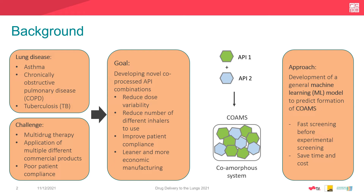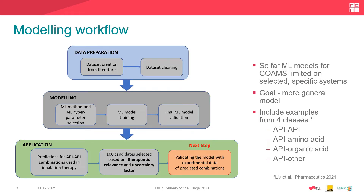We present a machine learning model to predict the formation of co-amorphous systems, which shall help in the screening phase before experimental work, saving time and cost. Machine learning models for predicting co-amorphous systems described so far in literature are limited to selected or specific kinds of systems — for example, formation of co-amorphous systems from APIs with just amino acids. The goal here was to have a more general model, so we included examples from four classes based on a classification from Liu et al. 2021.